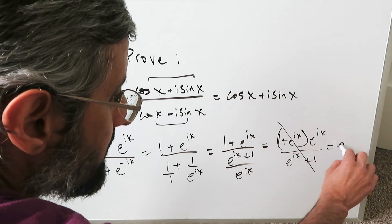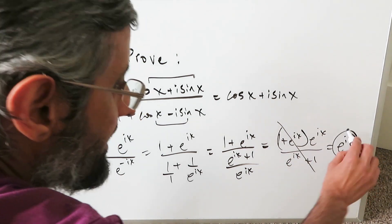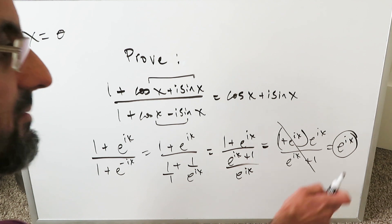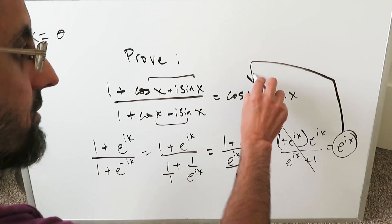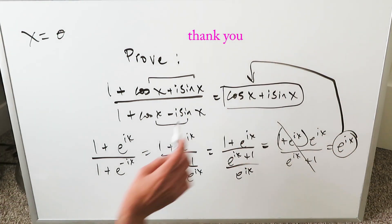All you end up with is e^(ix). If you expand this using Euler's identity, you get exactly that: cos x + i sin x. Our proof, or verification procedure, is complete.